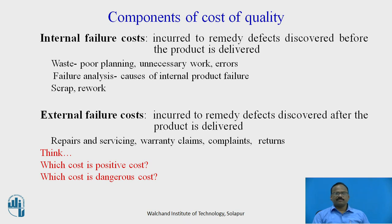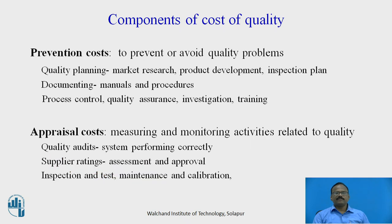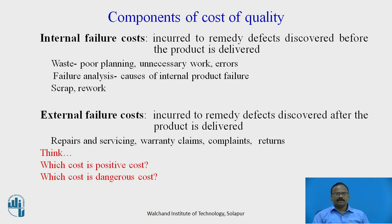External failure cost is incurred to remediate defects discovered after the product is delivered — meaning the product is already with the customer. This includes repairs and servicing, warranty claims, complaints and returns. If the product is not suitable, the reputation of the firm will deteriorate. In my opinion, prevention cost is the positive cost because it prevents problems and helps achieve good quality, while external failure cost is the dangerous cost — if the product is returned by the customer, that is very damaging.